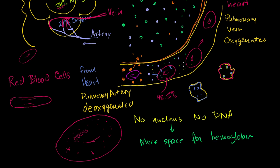If you had all of the hemoglobin sitting in your blood plasma, it would actually hurt the flow of the blood. The blood would become more viscous or more thick. By packaging the hemoglobin inside these containers - inside the red blood cells - it allows the blood to flow a lot better. Imagine if you put syrup straight into water: the water becomes a little syrupy and doesn't flow as well. So if you put the syrup inside little beads and let the beads flow in the water, the water wouldn't be gooey. That's exactly what's happening inside our blood - instead of having the hemoglobin sit in the plasma and make it gooey, it sits inside these beads we call red blood cells.